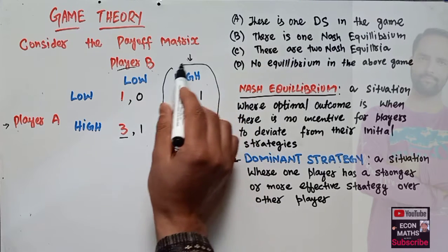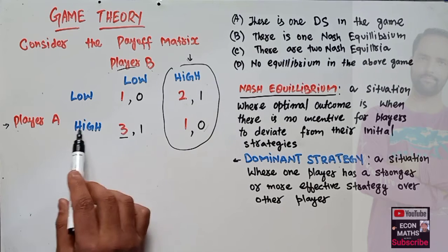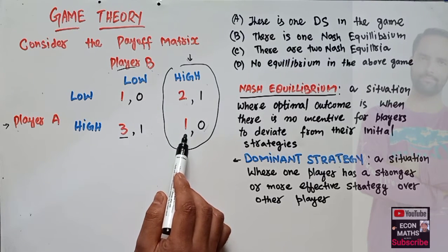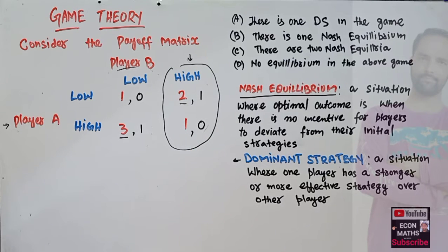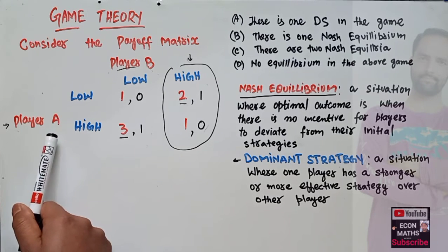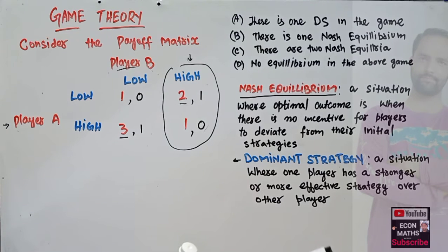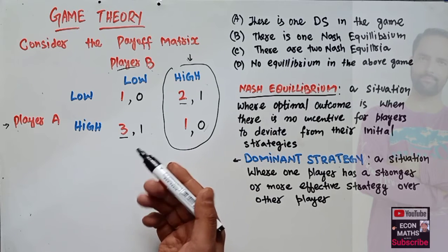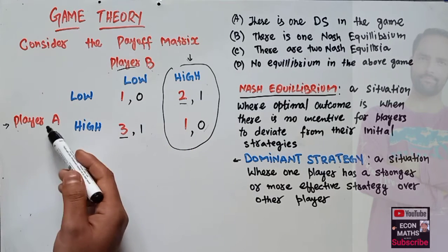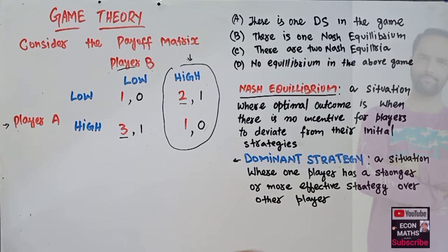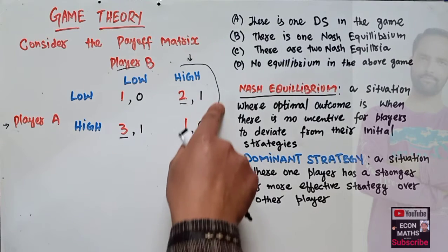Now let us see what happens when Player B chooses high. Again Player A has two options: low or high. Low gives a payoff of two, while high gives one, so Player A will choose low. We can see that Player A's strategy changes with Player B's strategy, which means Player A has no dominant strategy.